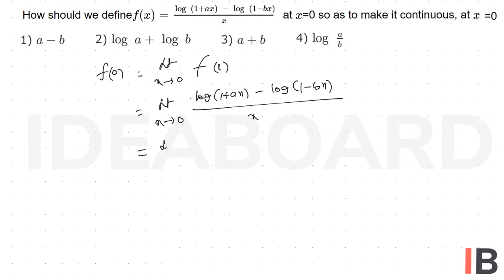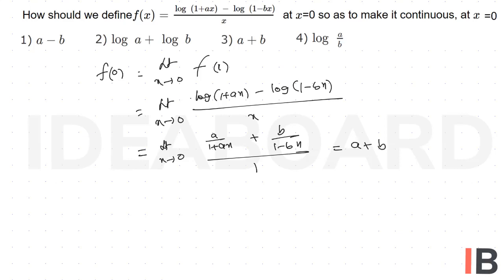Using L'Hôpital's Rule, we take the derivative of the numerator: a/(1+ax) + b/(1-bx), divided by 1. Applying the limit as x tends to 0, that is equal to a + b.